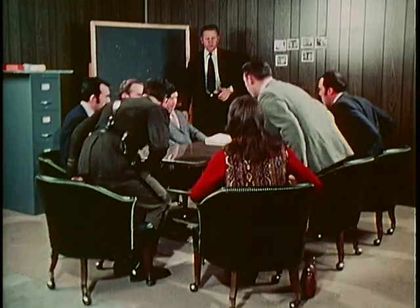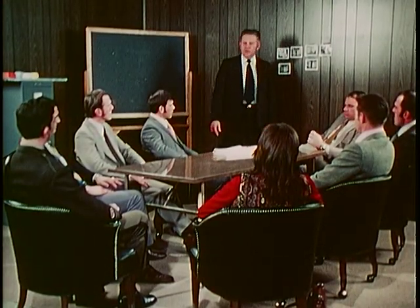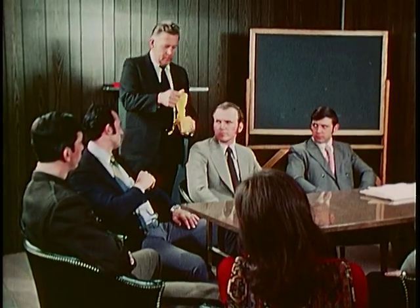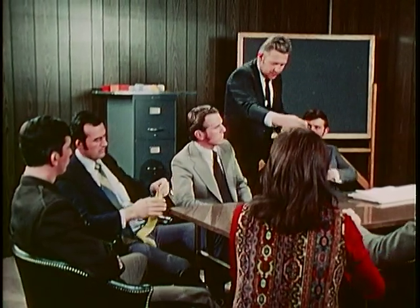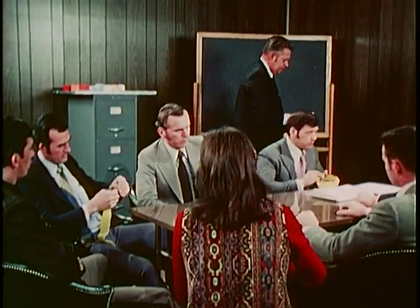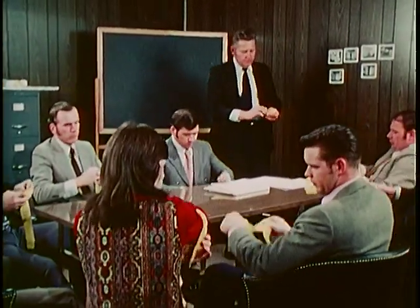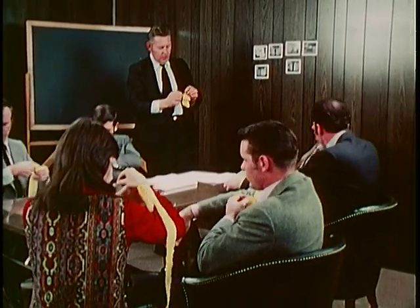If any local officers are going on the raid, the raid leader should have them stand up and identify themselves. It is good policy to wear some sort of identifying symbol — badge, armband, baseball cap, or coveralls — so that everybody will know who is on the raiding party. Ideally, the raid team should be made up of individuals who know each other, such as agents from the same field office.